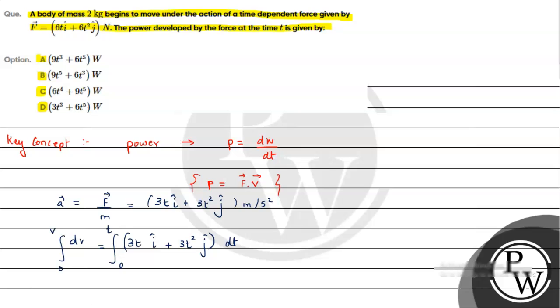From this we can say v will be equal to 3t²/2 î plus t³ĵ. And we have velocity and we have with us the value of force also.